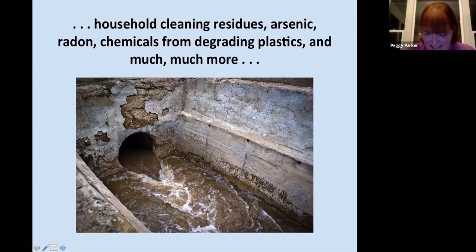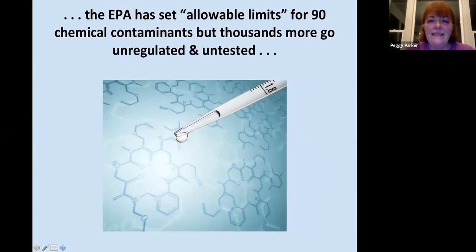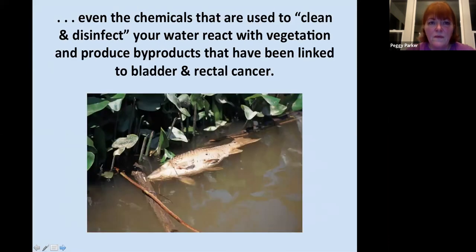Making you thirsty, am I? You'll also find household cleaning residues and arsenic and radon and chemicals from degrading plastics and so much more. It just gets depressing. The EPA has set allowable limits for 90 chemical contaminants, but thousands more go unregulated and untested because we develop about 12,000 new chemical compounds every year.